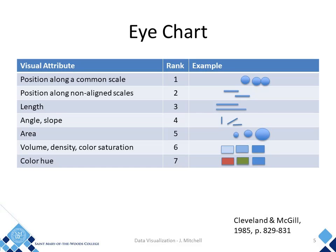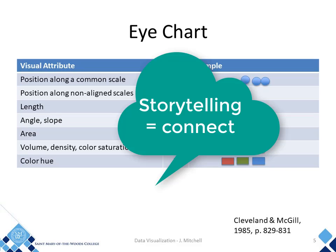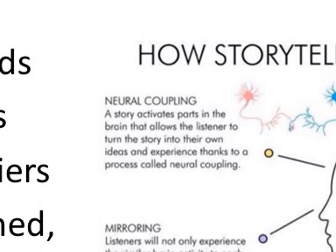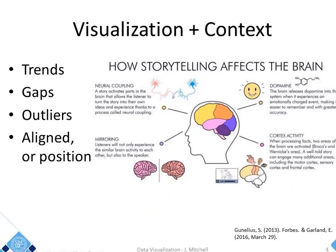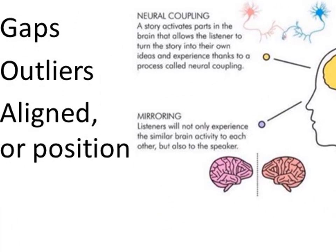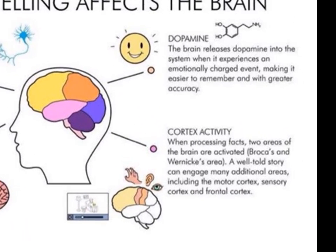But the real magic happens when we add context to the visuals. Webster defines storytelling as discourse designed to connect a series of happenings. Neural coupling explains how the listener turns the presenter's story into their own experiences. Mirroring explains what I mean when I say we're on the same wavelength or on the same page. If you only present facts, two areas of the brain are activated. But if you use a well-told story, you engage many additional areas. And if the storyteller evokes an emotion, you will remember the story with greater accuracy.